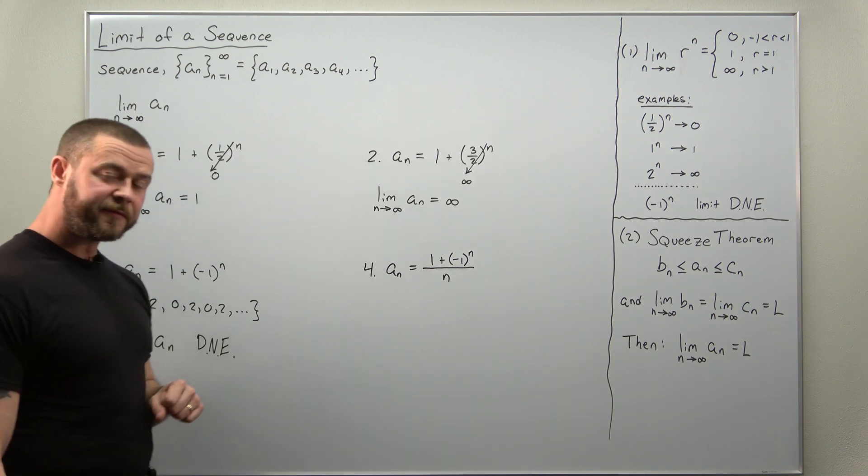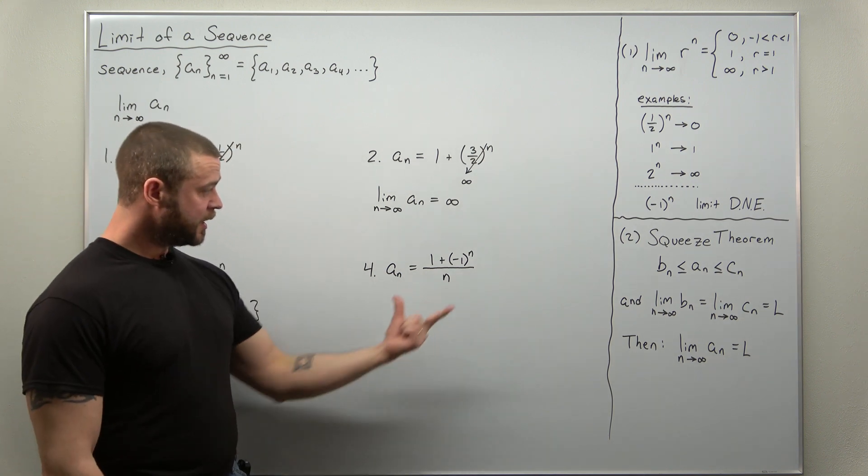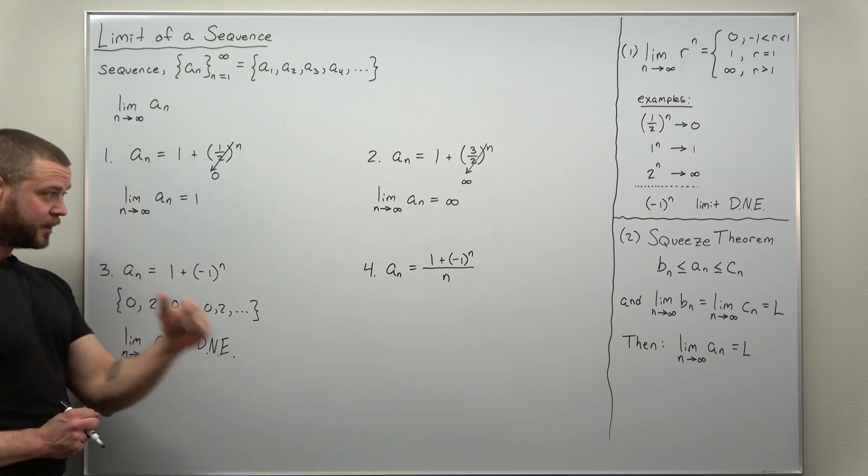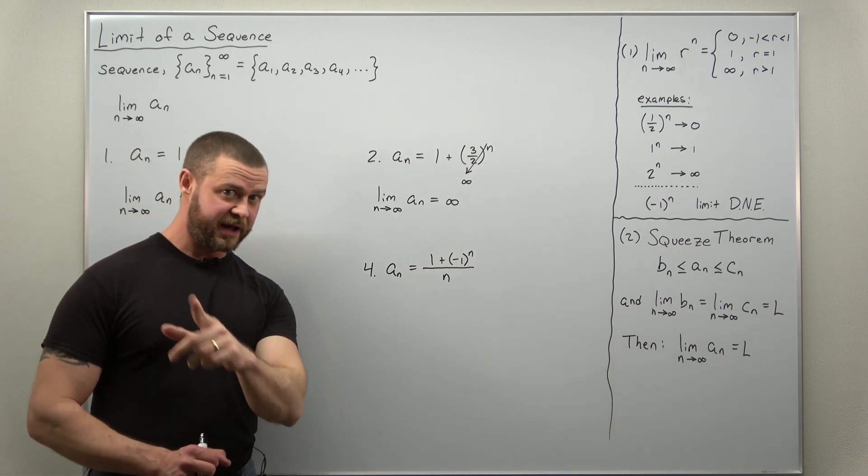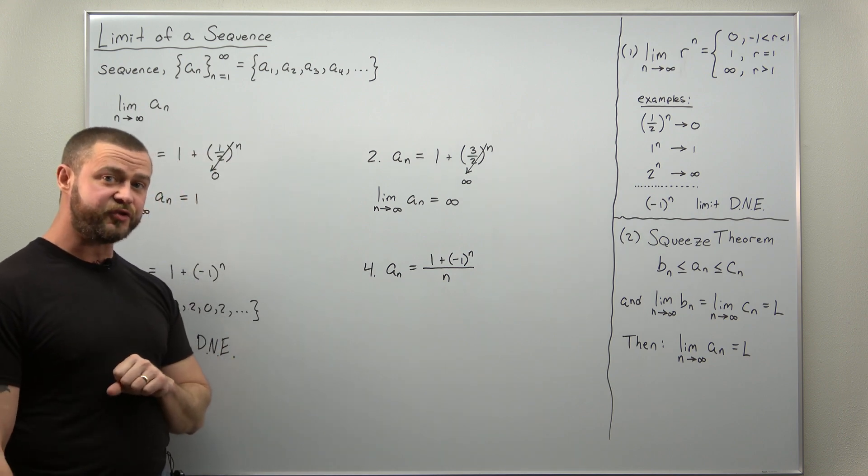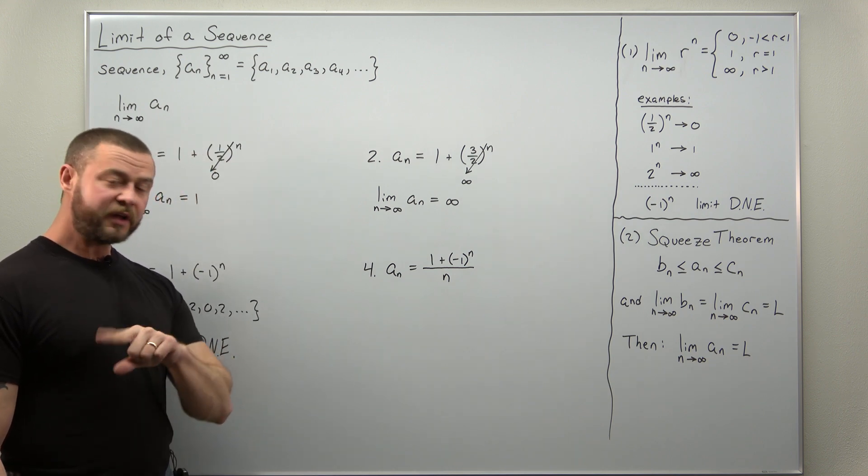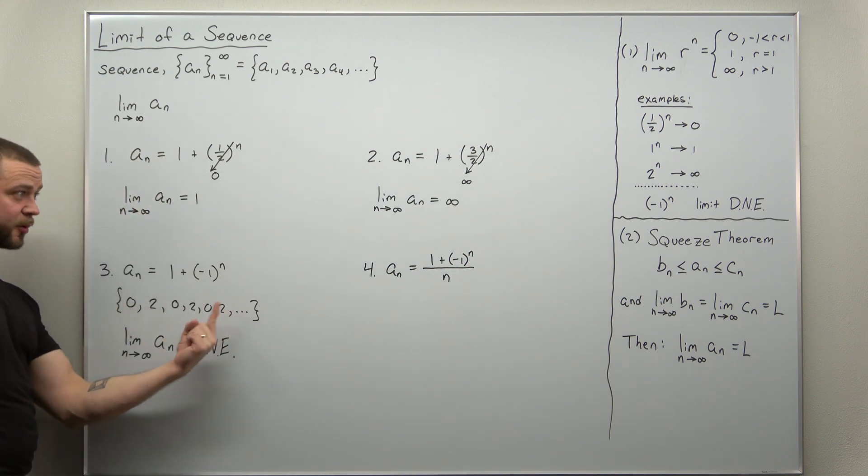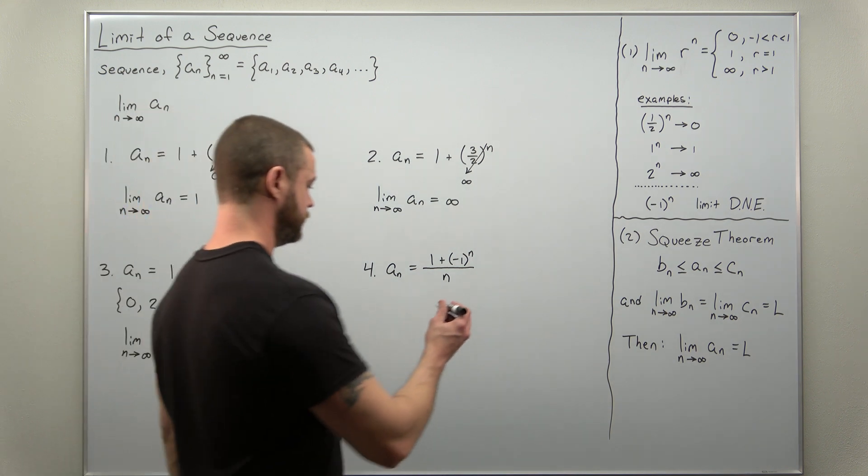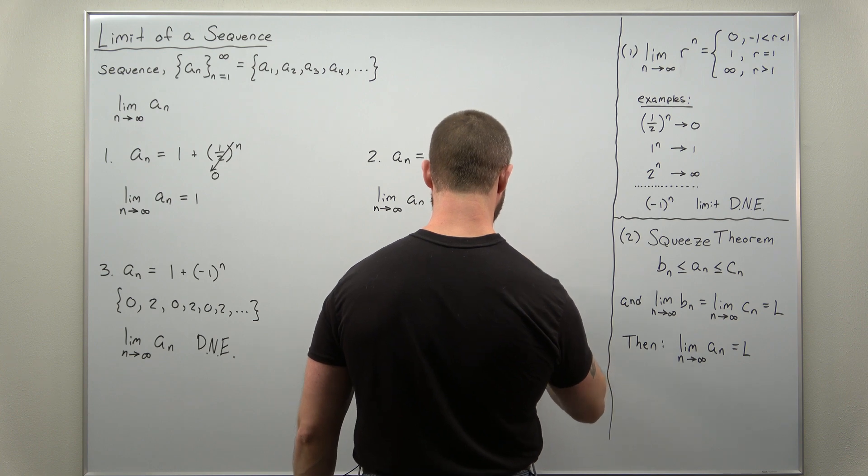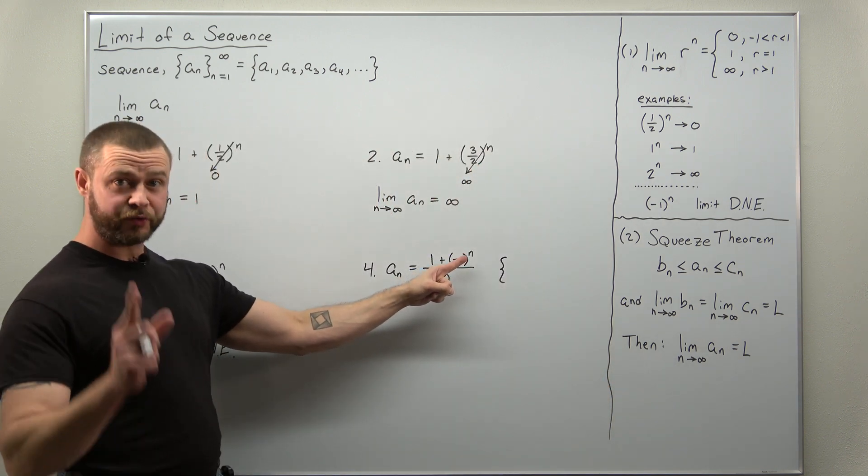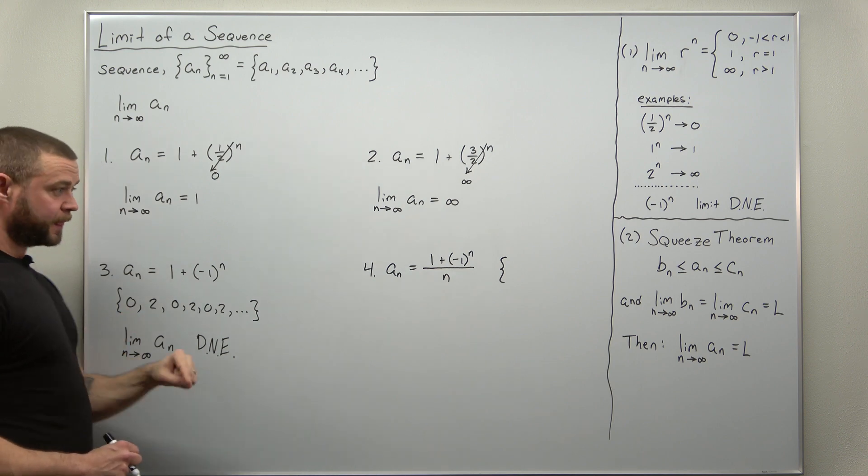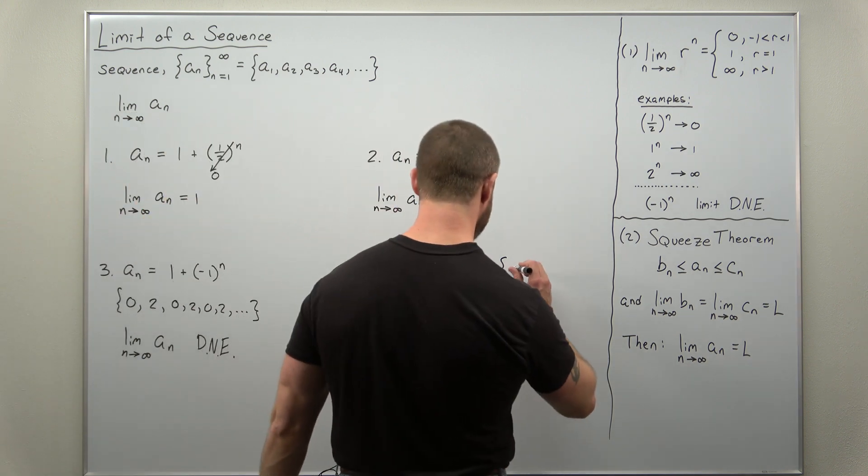All right, now we're ready for the fourth example. The numerator is the same term over here from example three, but notice now we're dividing by n and that's going to make a huge difference. So let's take a look at some of these terms. We basically have the numerators here. All right, so let's start with n equals one. Our numerator is going to be zero divided by one, so that will just be zero.